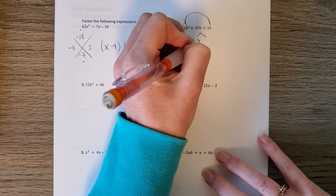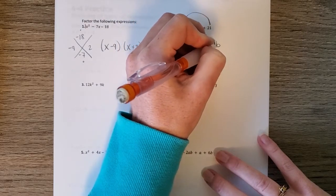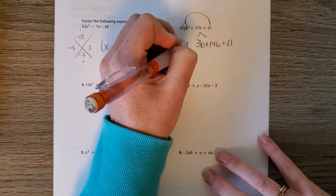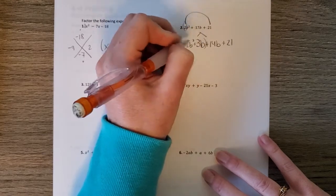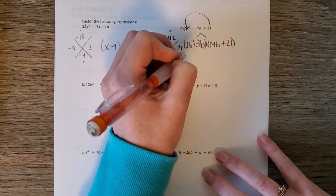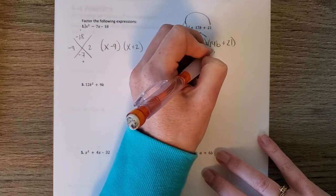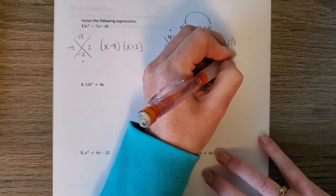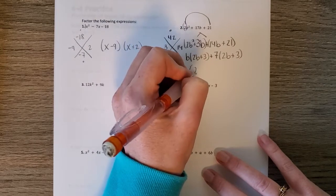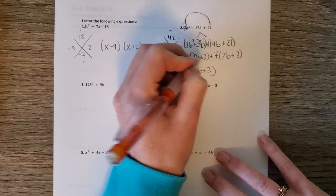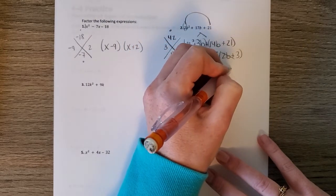So now we have to split the middle. So 3b plus 14b. Bring down the 21 and the 2b squared. And group. Factor out of b. We get 2b plus 3. Factor out of 7, 2b plus 3. And then we get 2b plus 3 times b plus 7.